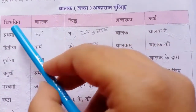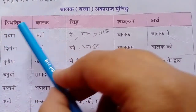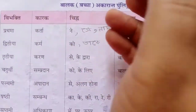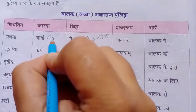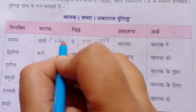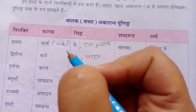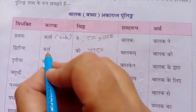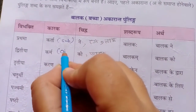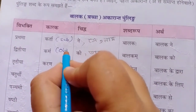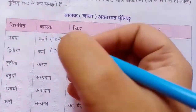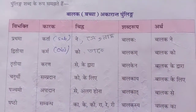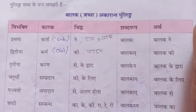Prathama means Karta, that means subject. Karta means subject. Dwitiya means Karma, and Karma means object. Subject means you know — the name — and Karma means the things, that means object.